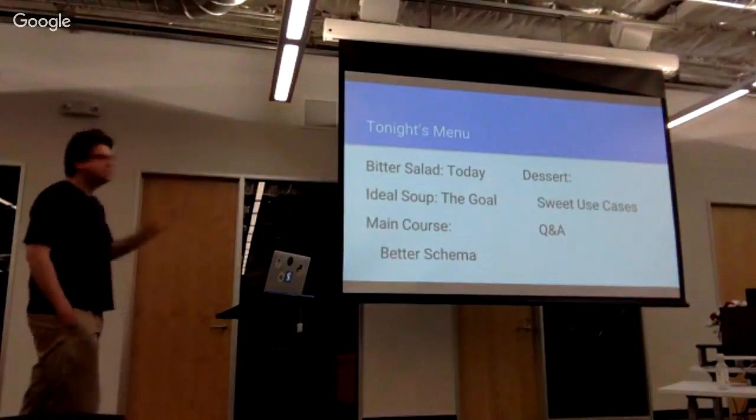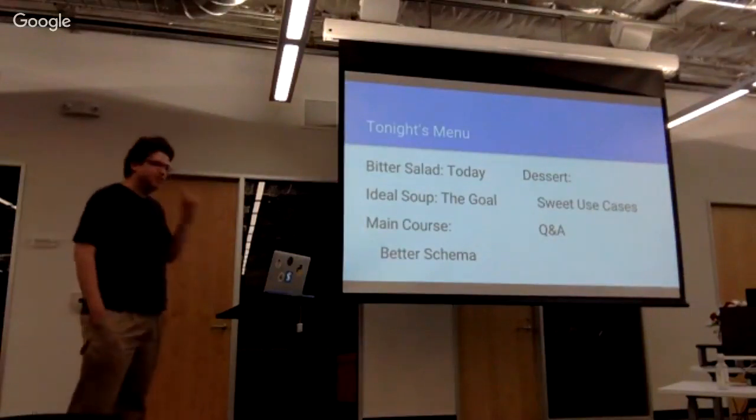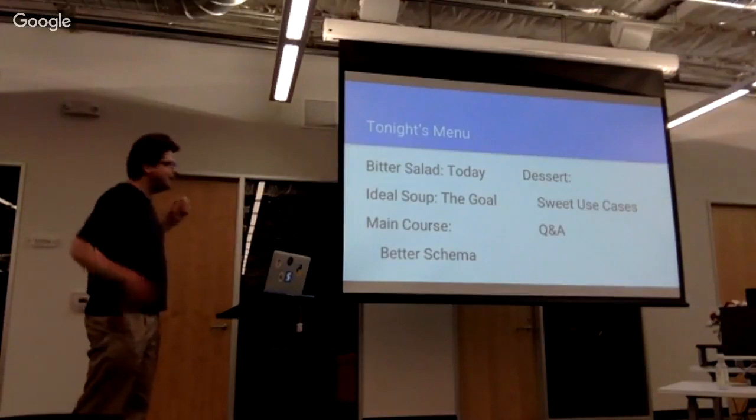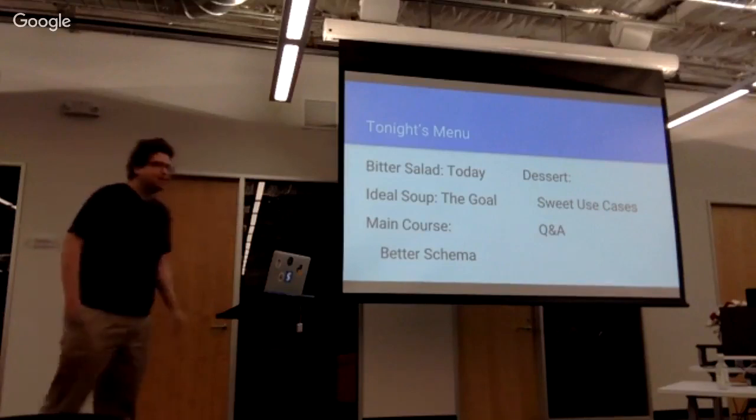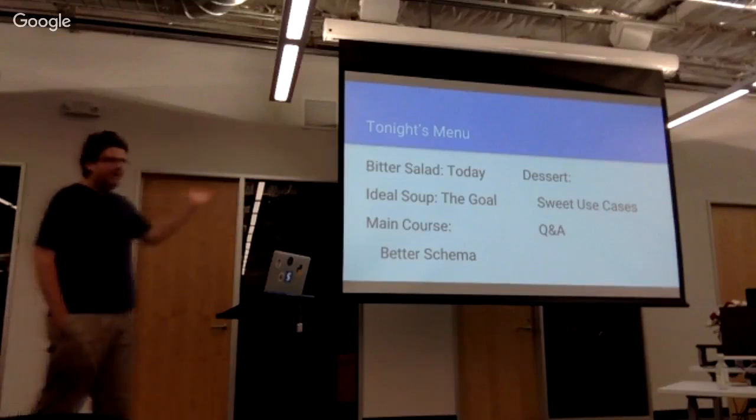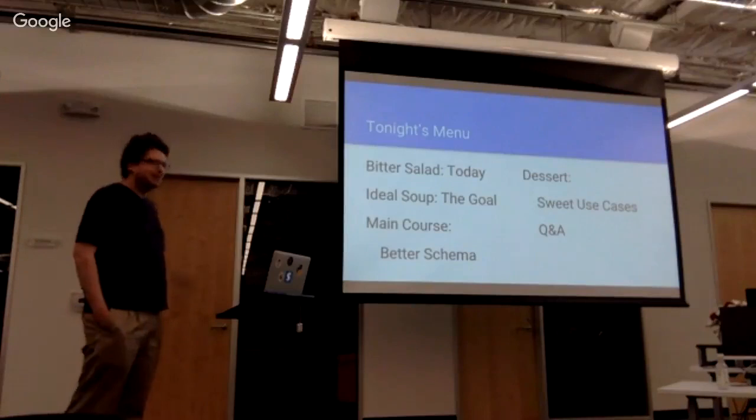So first, what's the menu to talk? First, we're going to start with a bitter salad of the current situation of trying to validate structured data. Then we're going to move on to the ideal soup of what we imagine a perfect solution might look like. Then we're going to move on to the main course of how we can actually achieve this. And then for dessert, we're going to have some sweet use cases and a Q&A.